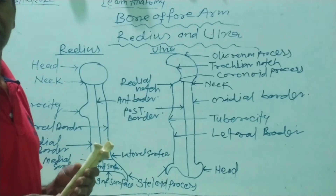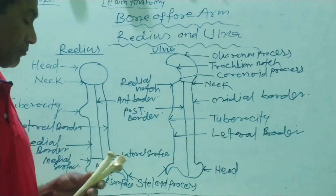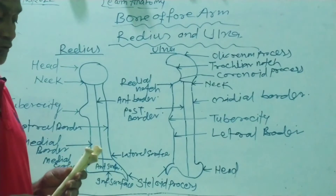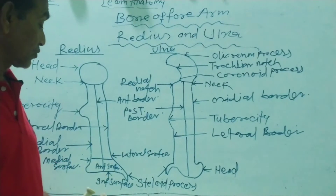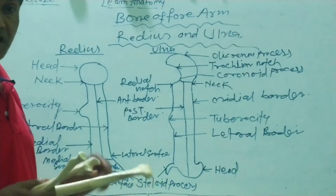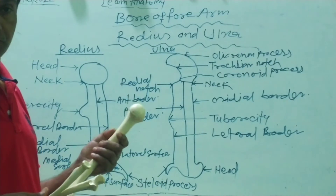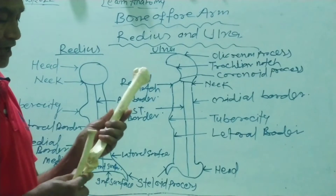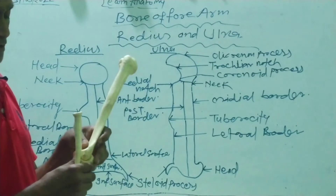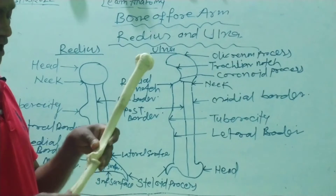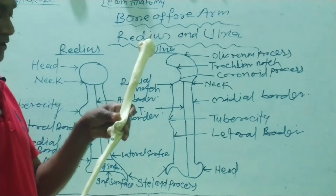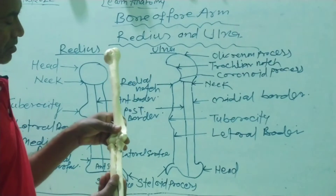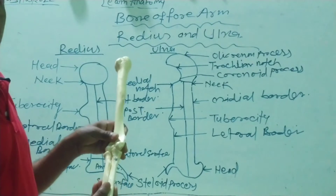These are the two parallel long bones. The radius and ulna are superiorly articulated with the bone of the arm known as the humerus, forming the radio-ulnar joint or humeral joint — also called the elbow joint.